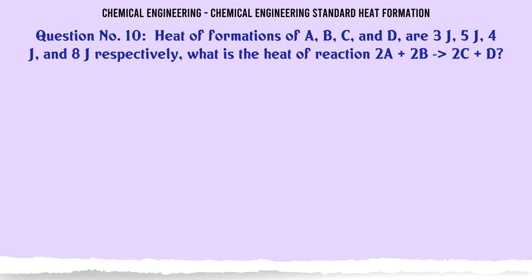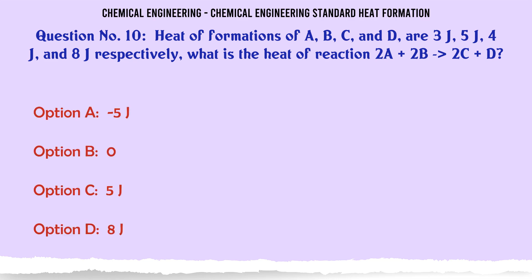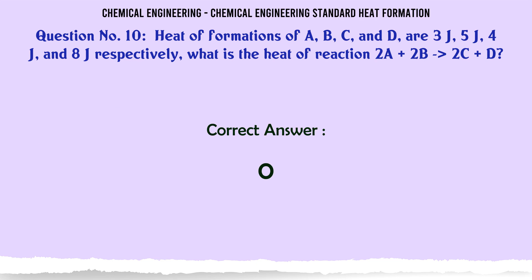Heats of formation of A, B, C and D are 3J, 5J, 4J and 8J respectively. What is the heat of reaction 2A + 2B → 2C + D? A) 5J. B) 0. C) -5J. D) 8J. The correct answer is 0.